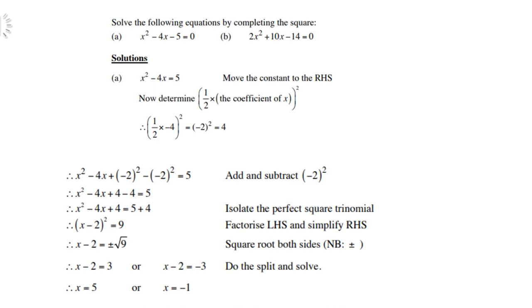Let's solve the following equations by completing the square. First, equation (a): x squared minus 4x minus 5 equals 0. First, transfer the 5 to the right-hand side, then take x squared minus 4x and complete the square.